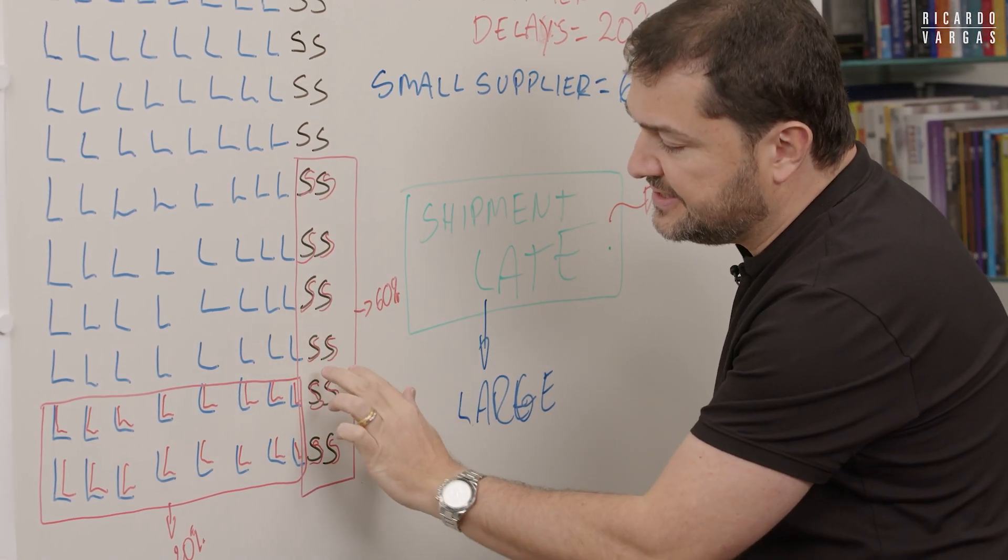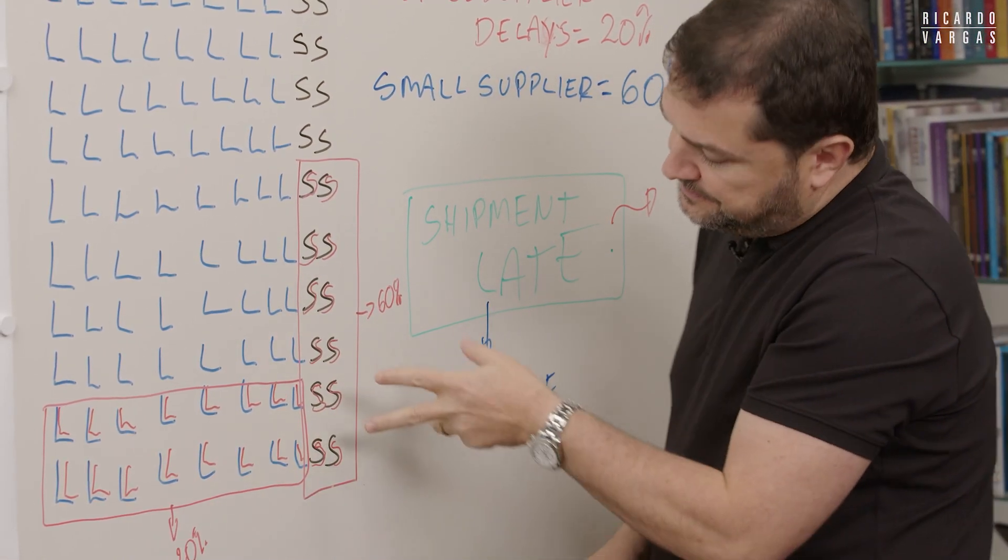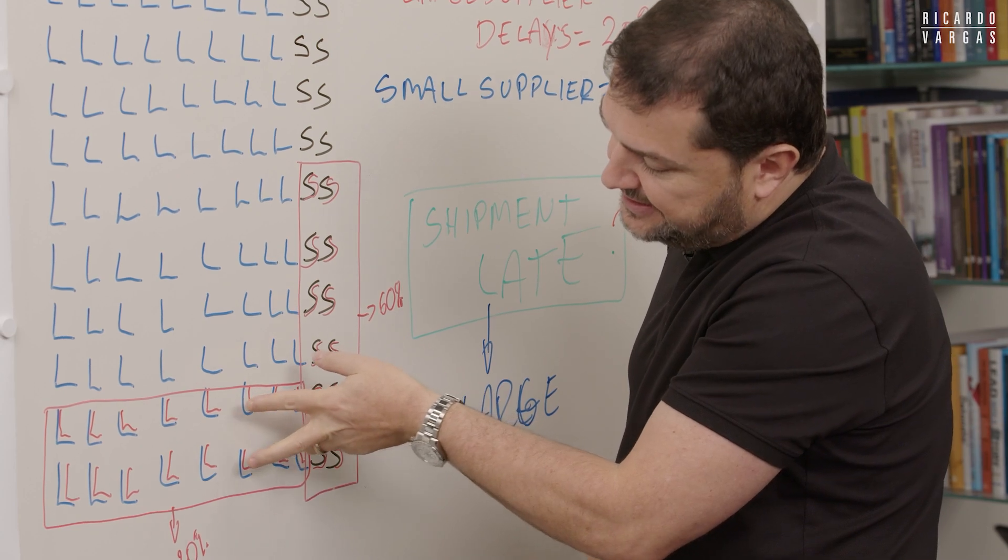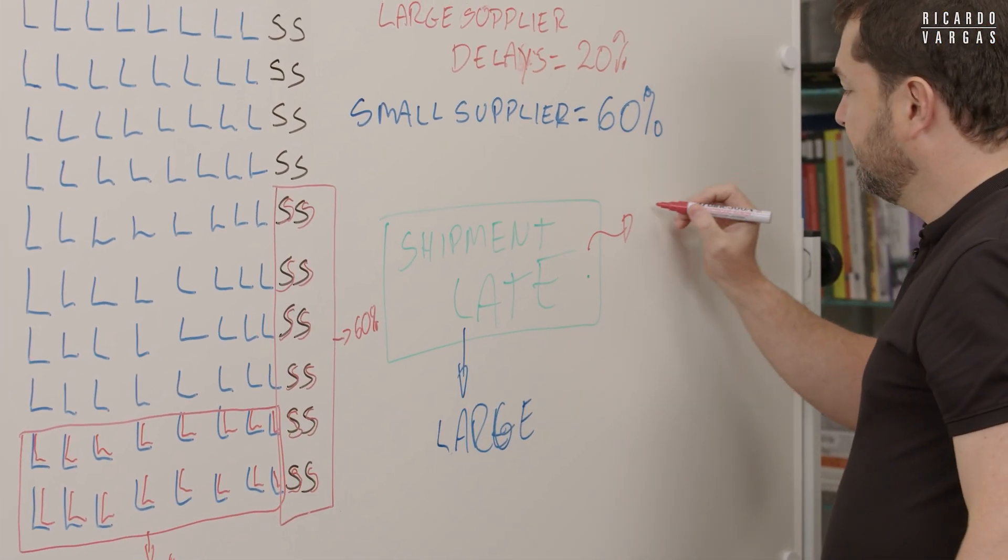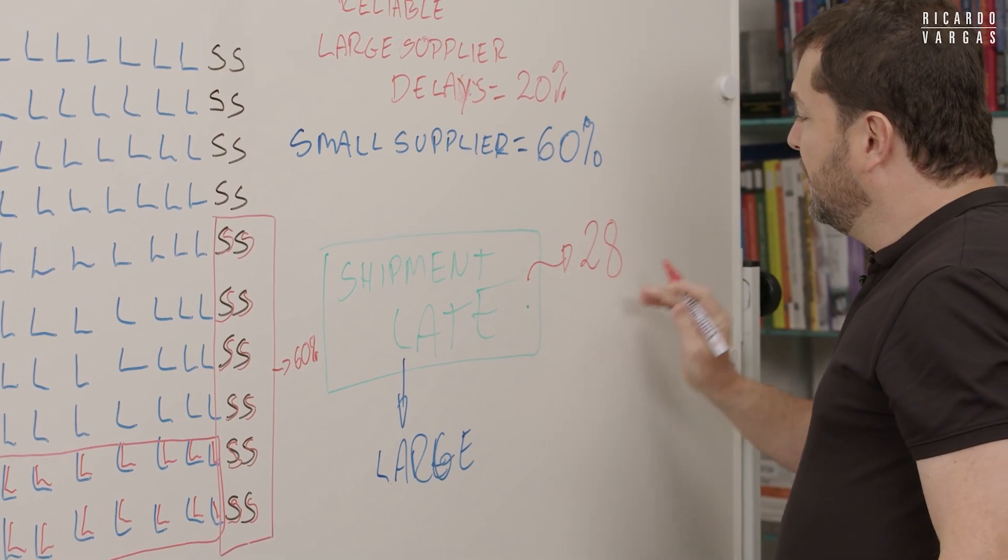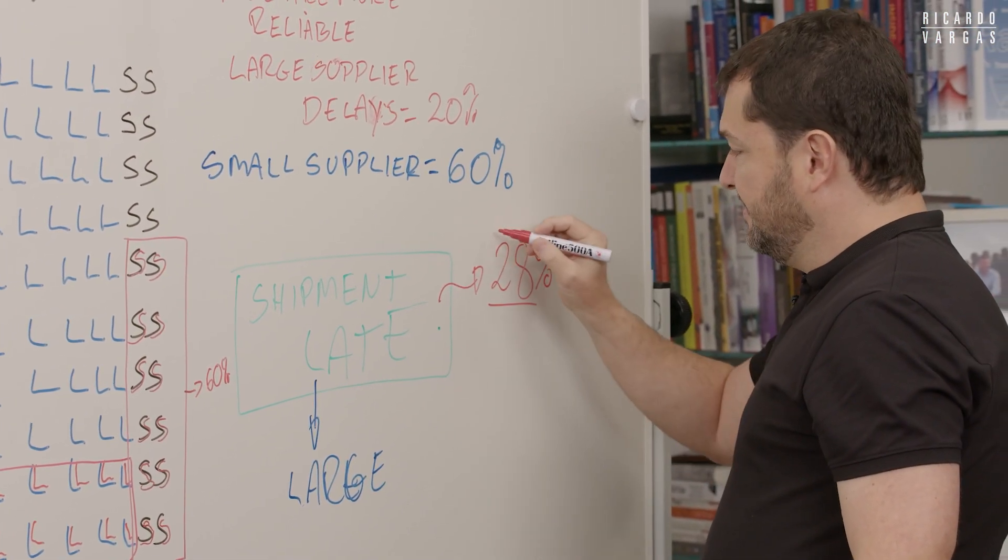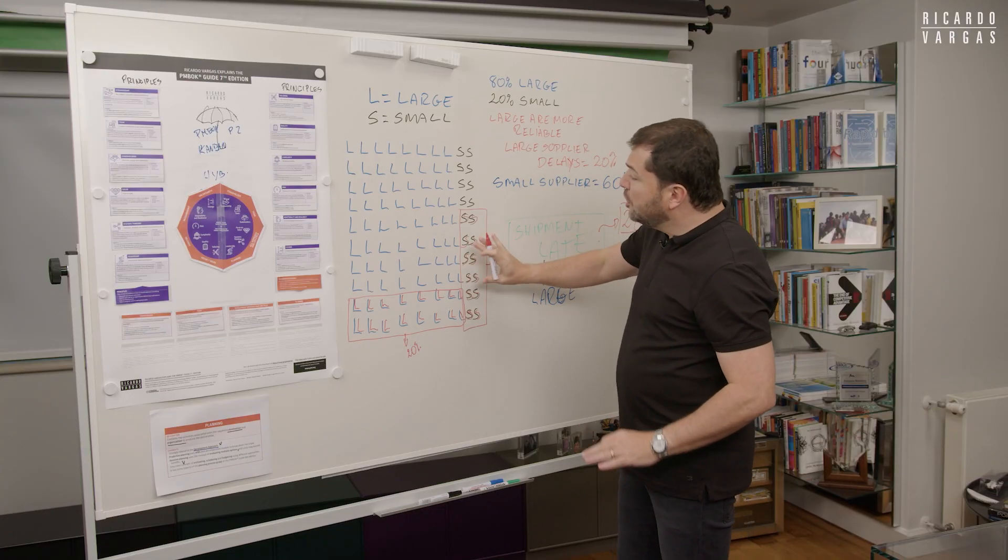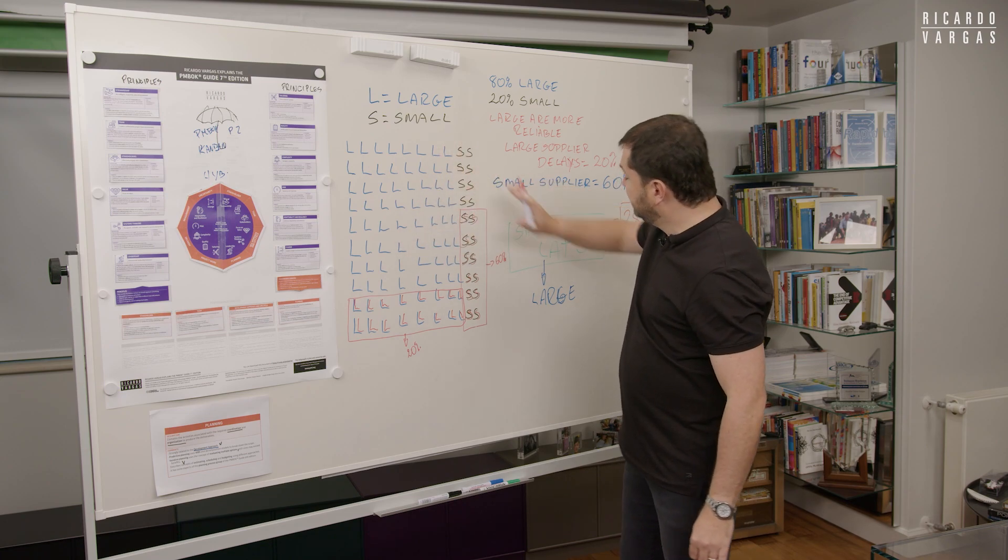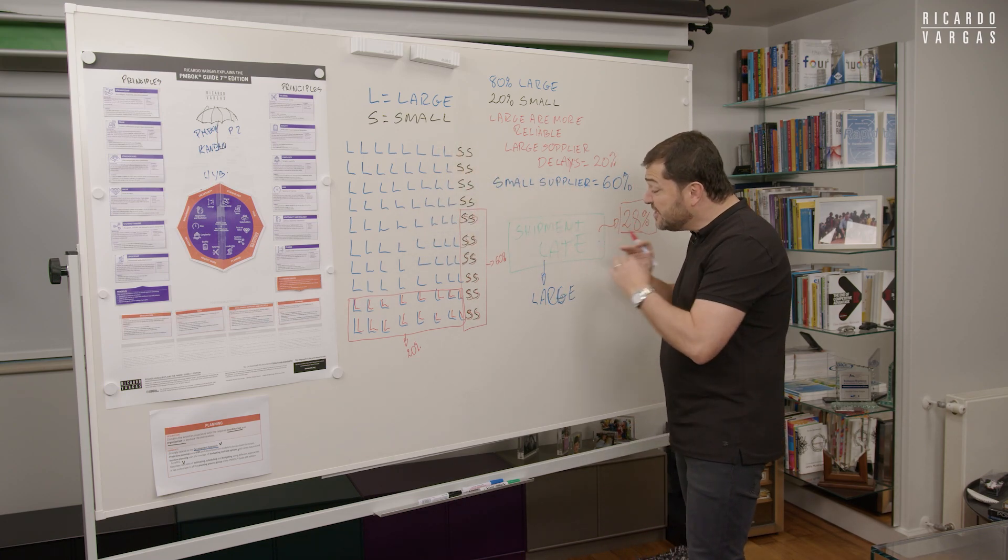So to be late, 2, 4, 6, 8, 10, 12, 14, 16, 18, 20, 22, 24, 26, 28. So 28% of my universe is late. Means there is no possibility of being any of this because it's already late. And I know that.